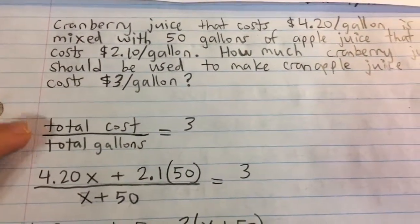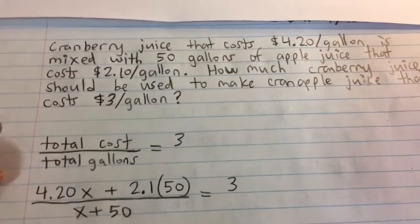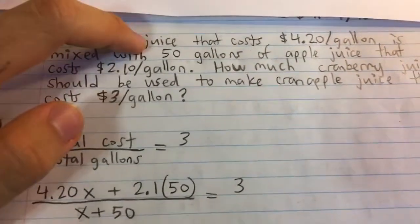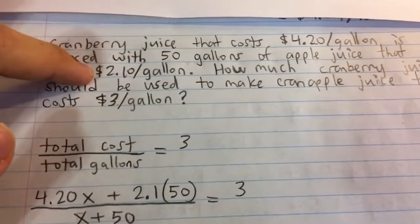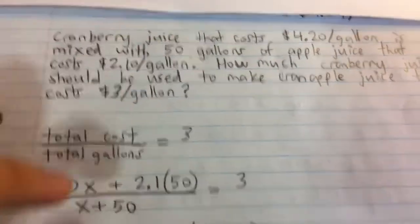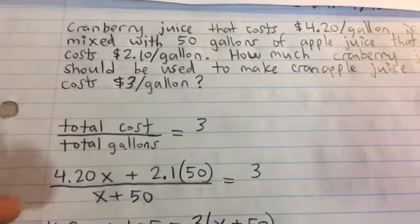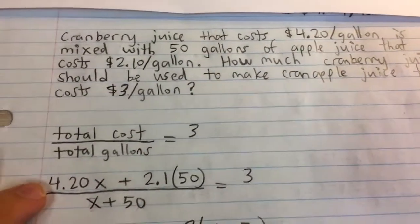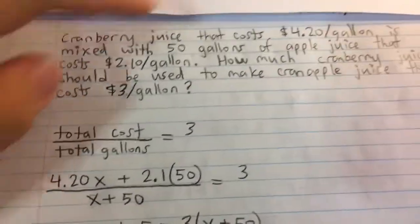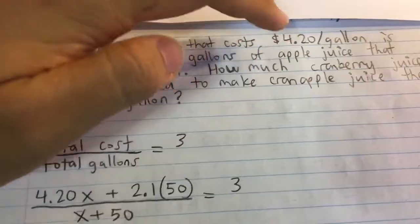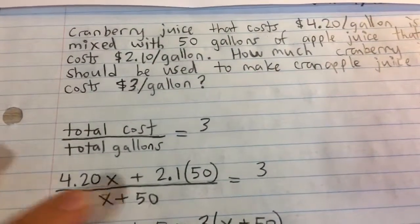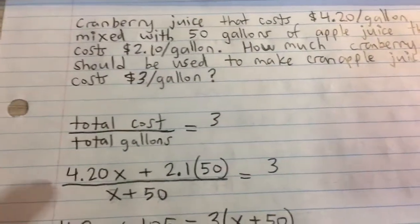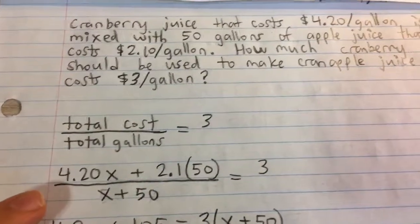First, let's create an expression for the total cost. We know the cost of the apple juice because it's fixed. 50 gallons, $2.10 per gallon. So that's 50 times 2.1, and that's fixed. But the cranberry juice is the variable that we need to find. So it costs $4.20 per gallon. If we multiply that by the number of gallons, which we'll say is x, that's going to give us the cost for the cranberry juice.